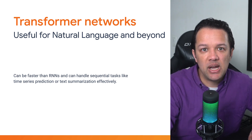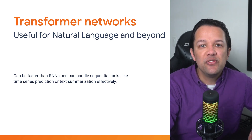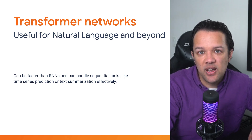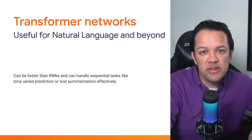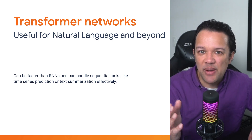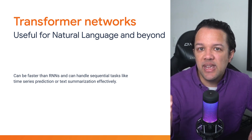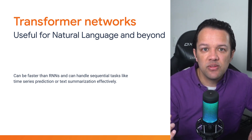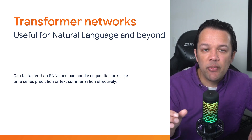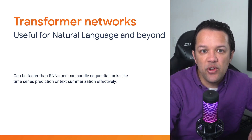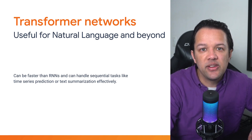One other popular architecture right now is the transformer network. These can be faster than RNNs and can handle sequential tasks pretty well, such as time series prediction or even text summarization and translation. In fact, one of their most well-known use cases is for natural language processing. The key difference is that transformers use a breakthrough in research known as attention to understand, at each given step through a sequence, what other parts of the sequence are most important to focus on when learning about that data.